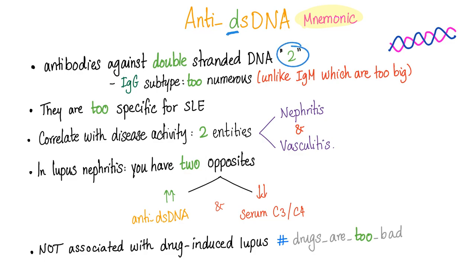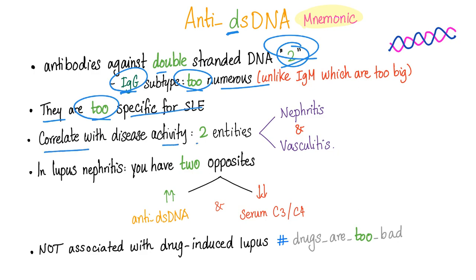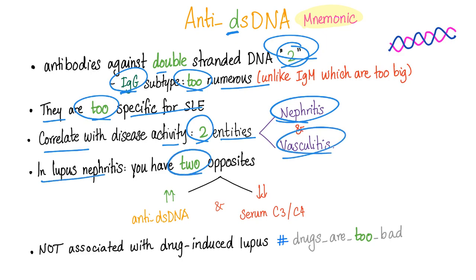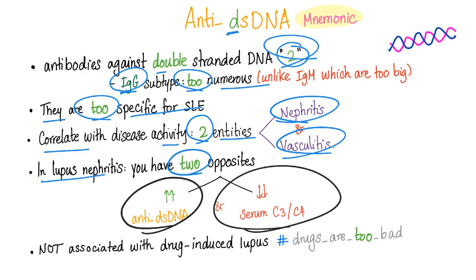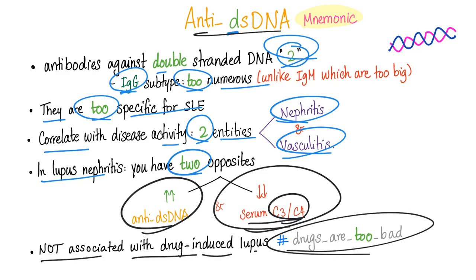Here is the mnemonic for anti-double-stranded DNA: it's 'double,' so everything is two. Against the double-stranded DNA, IgG subtype 2. They are too specific for lupus. They correlate with disease activity regarding two entities: nephritis and vasculitis. In lupus nephritis, you have two opposites — increased anti-double-stranded DNA levels and decreased plasma complement, known as hypocomplementemia, specifically C3 and C4. Anti-double-stranded DNA are not associated with drug-induced lupus.